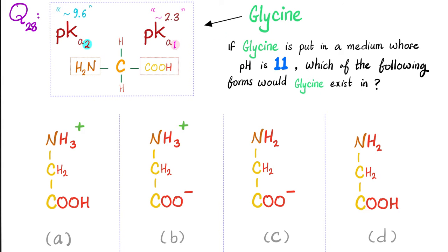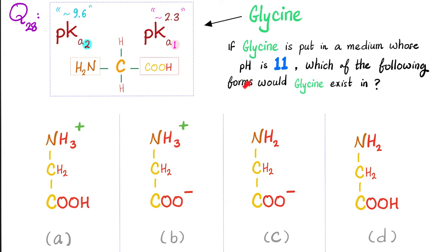Next, here's the amino acid glycine — we call it an amino acid because it has an amino group and a carboxylic acid group. Each group has its own pKa. The pKa of the carboxylic acid group is about 2.3, and the pKa of the NH2 group is about 9.6. Let's put this glycine in a medium whose pH is 11.